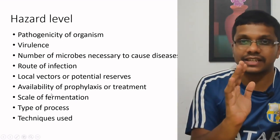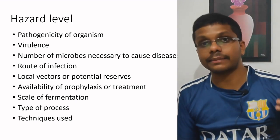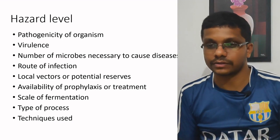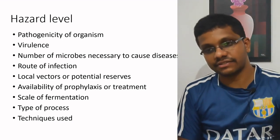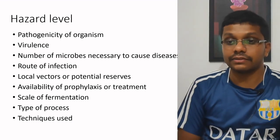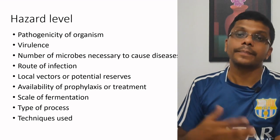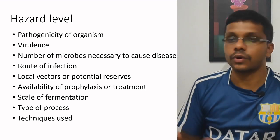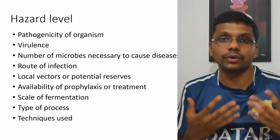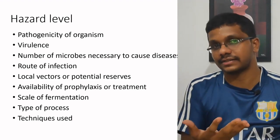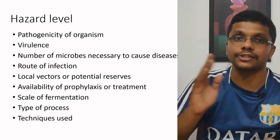Seventh, the scale of fermentation — for small scale, we don't need as much containment, but as the scale increases, the containment level should be increased. Eighth, the type of process — whether we are doing batch culture, fed-batch culture, or continuous culture — and what techniques are used for the fermentation. Based on all these points, we assess the hazard level of the entire process and, based on that hazard level, assign the fermentation to a different containment level.